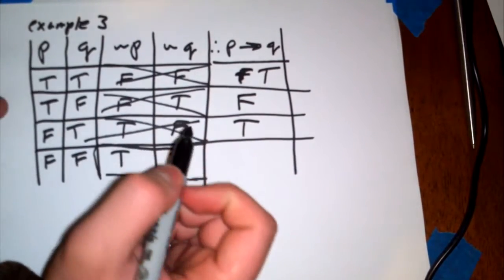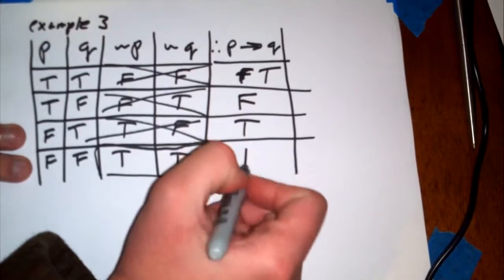And the last two are true. P can be false and Q can be true. And the last one, they can both be false. So, that's true.